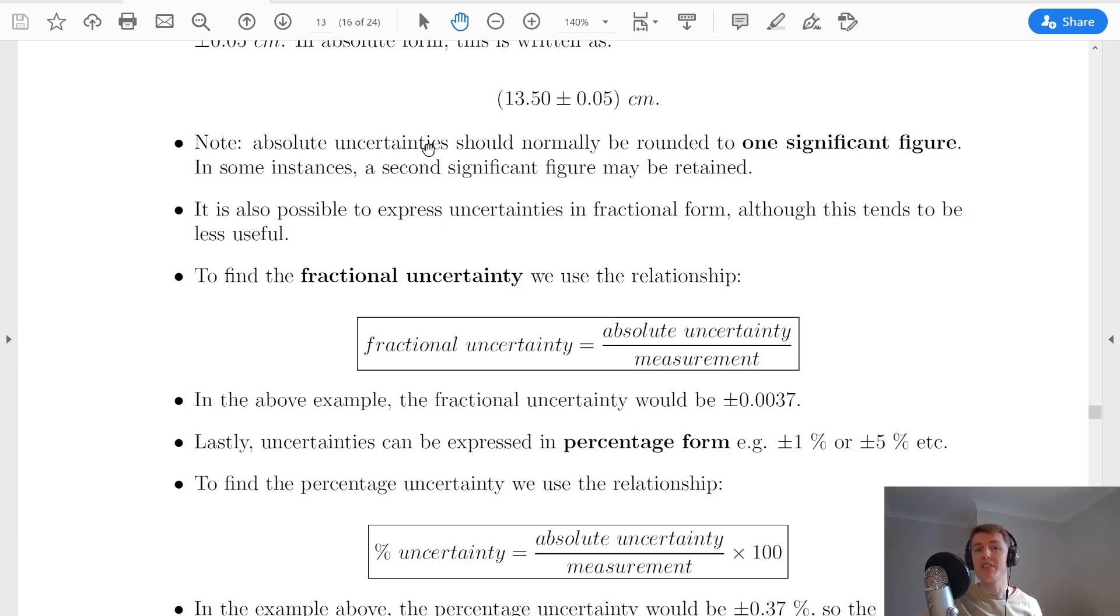Note that absolute uncertainties should normally be rounded to one significant figure. In some instances you'll get away with stating a second significant figure but usually one is fine. You'll notice I've done that here because this absolute uncertainty 0.05 is one significant figure only, that's the 5, because for significant figures the leading zeros in a decimal number do not count.